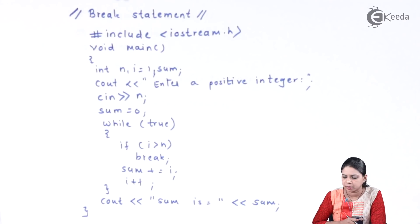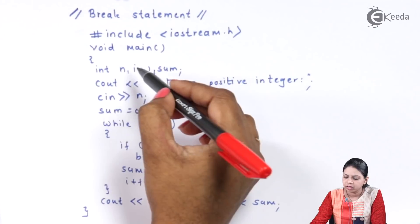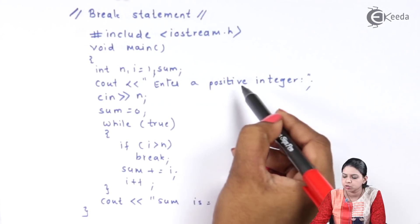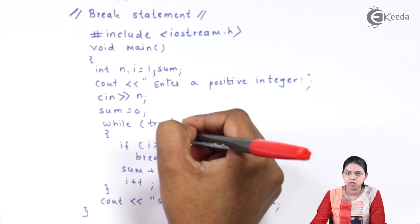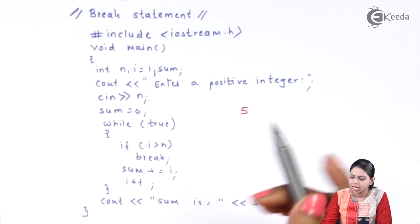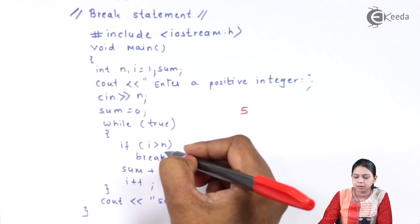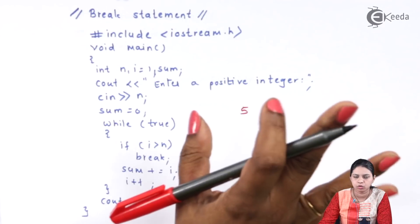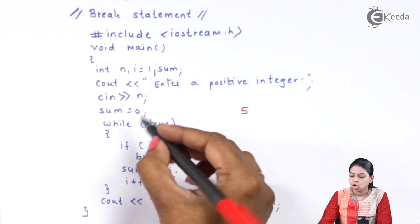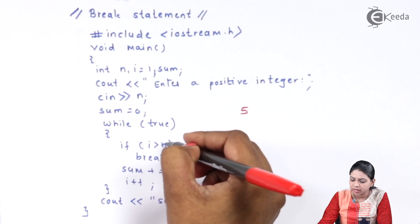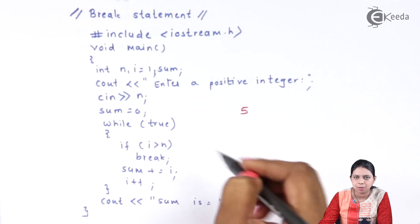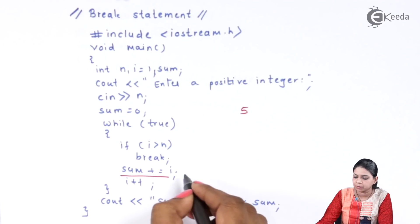Now this is the example of the break statement. In this example, you have declared three variables: n, i, and sum. Your i value is initialized to 1 and you are telling the user to enter some positive integer. The while(2) means the loop keeps rotating while the condition is true. If i becomes greater than n, then you have to break the loop. Here I have made use of the shorthand operator: sum += i, which is the same as sum = sum + i.